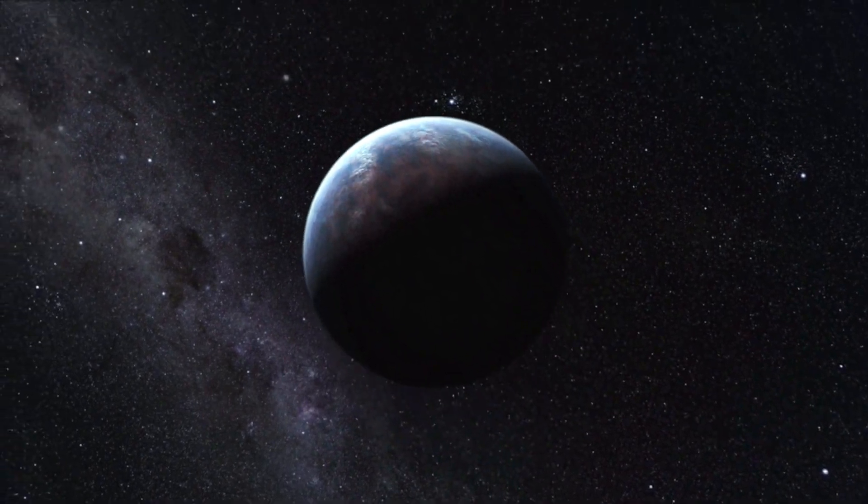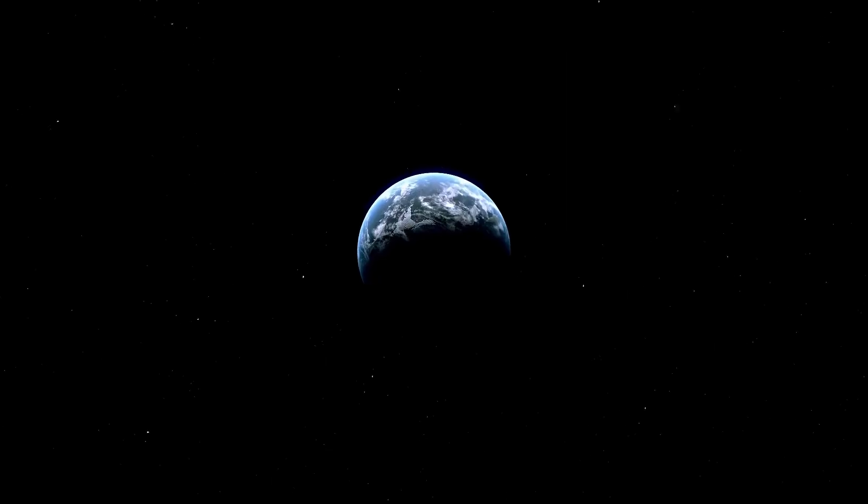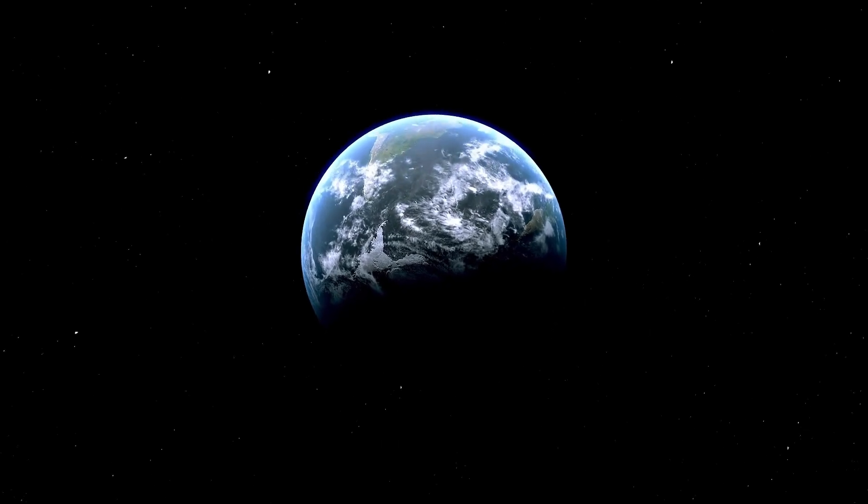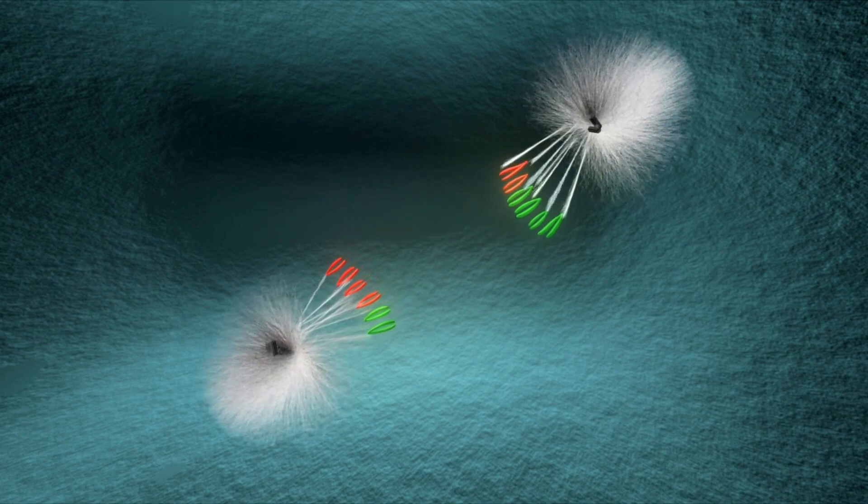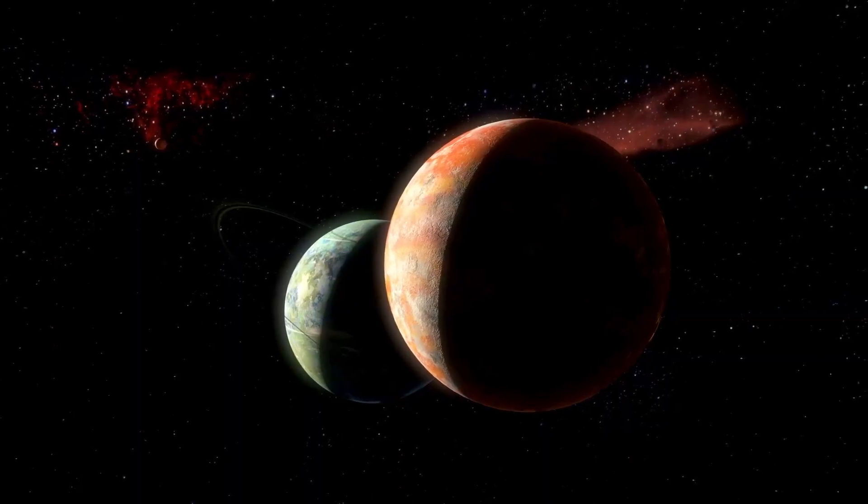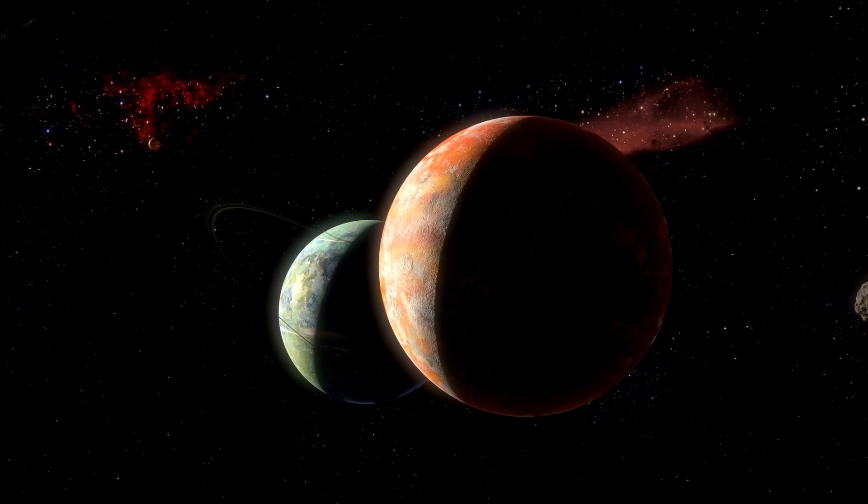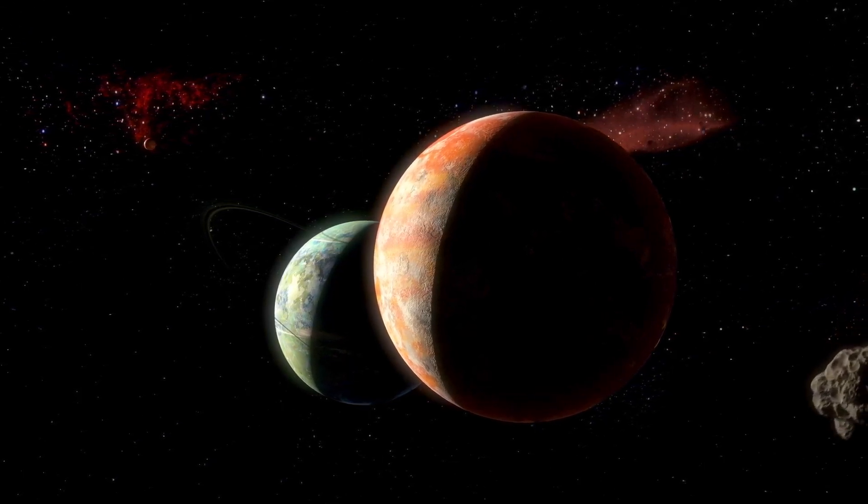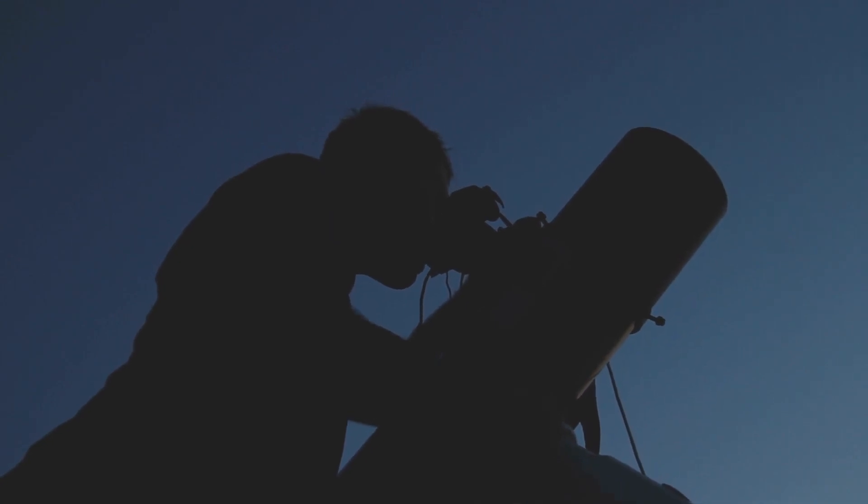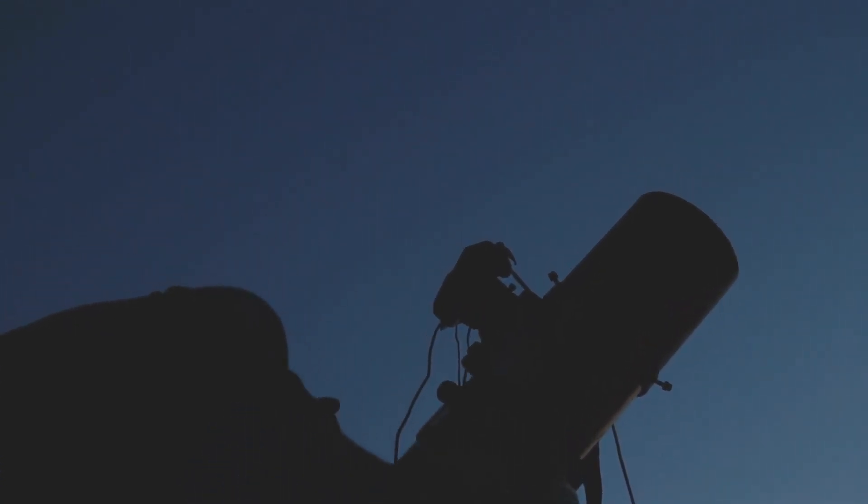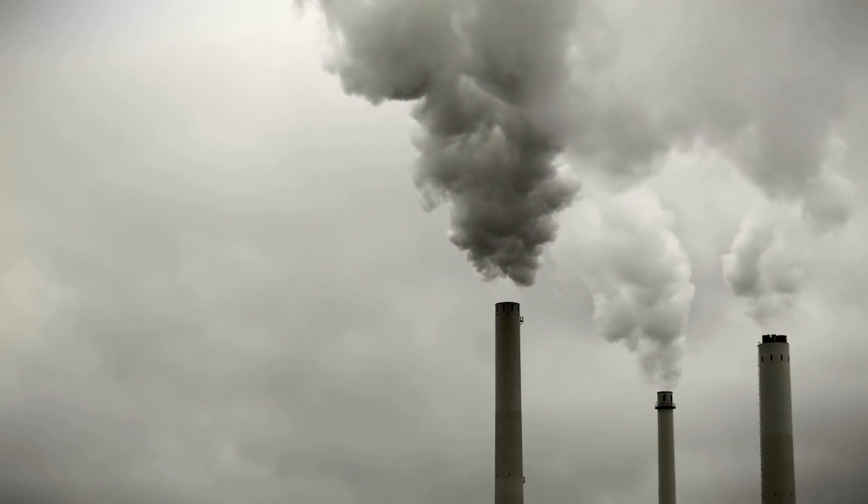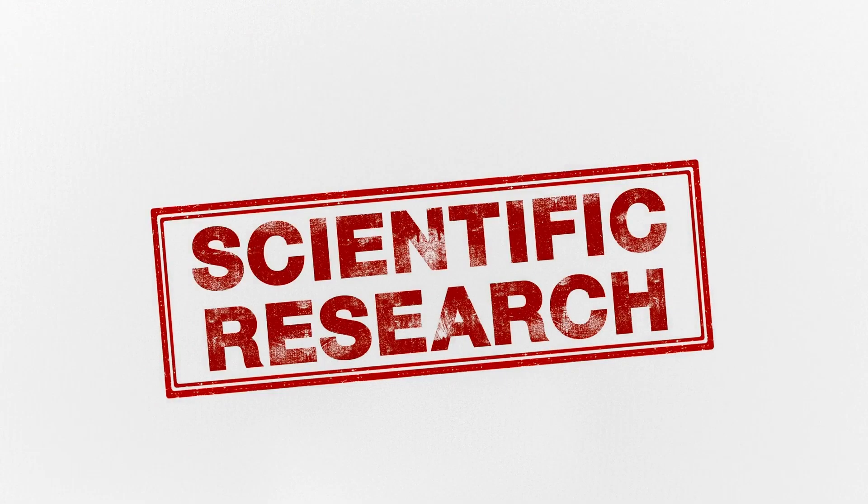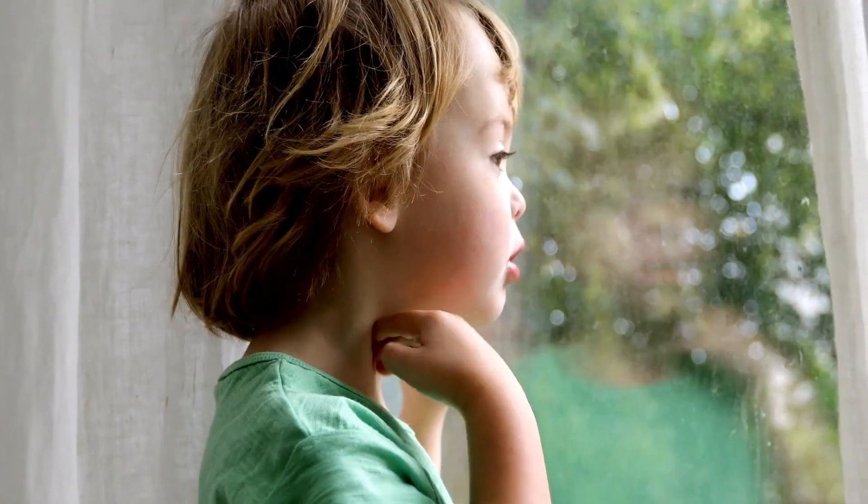Proxima Centauri B sits within the vastness of space, surrounding its star Proxima Centauri, a simple 4.2 light years away from Earth. This far-off world has captured our imagination, raising inquiries about its likeness to our planet. Proxima Centauri isn't alone in its journey; it shares an orbit with another sizable planet, Proxima Centauri C.